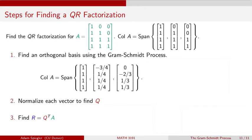The first step would be finding an orthogonal basis using the Gram-Schmidt process. We pick the first vector as (1, 1, 1, 1). Going through the rest of the Gram-Schmidt process, you can verify that the next vector in the basis is (−3/4, 1/4, 1/4, 1/4). These two vectors are orthogonal to each other. The third vector is (0, −2/3, 1/3, 1/3). You can check that V1 and V3 are orthogonal, and V2 and V3 are orthogonal. So now we have an orthogonal basis for the column space.